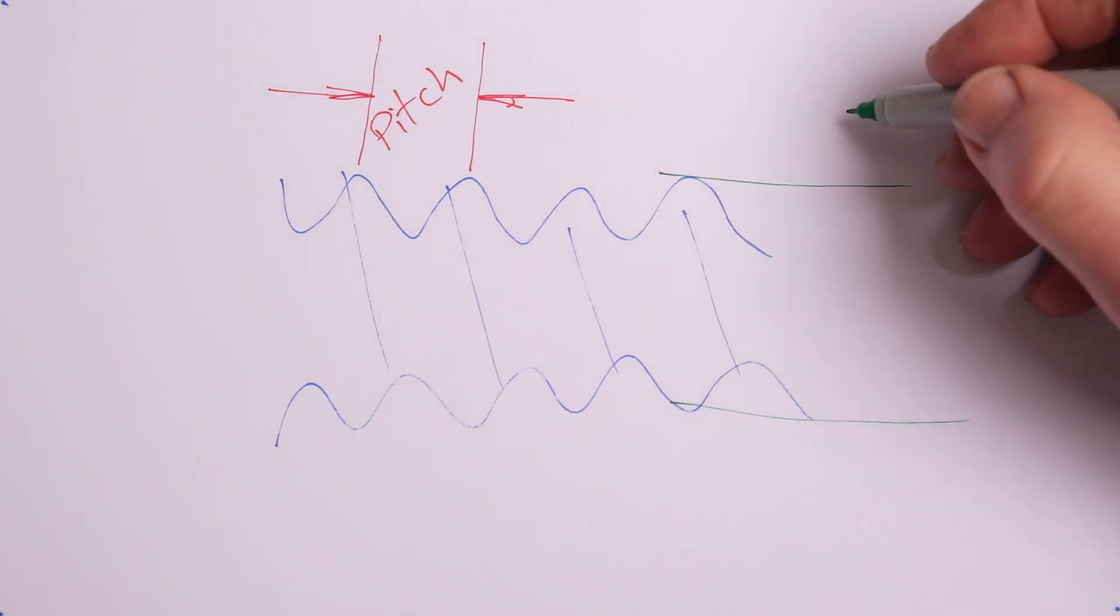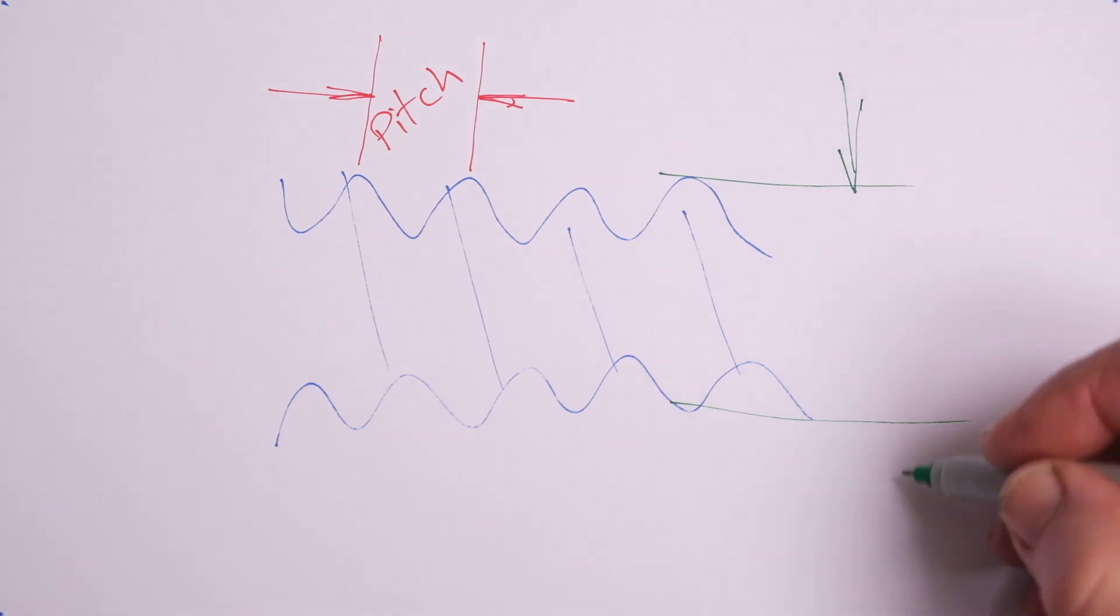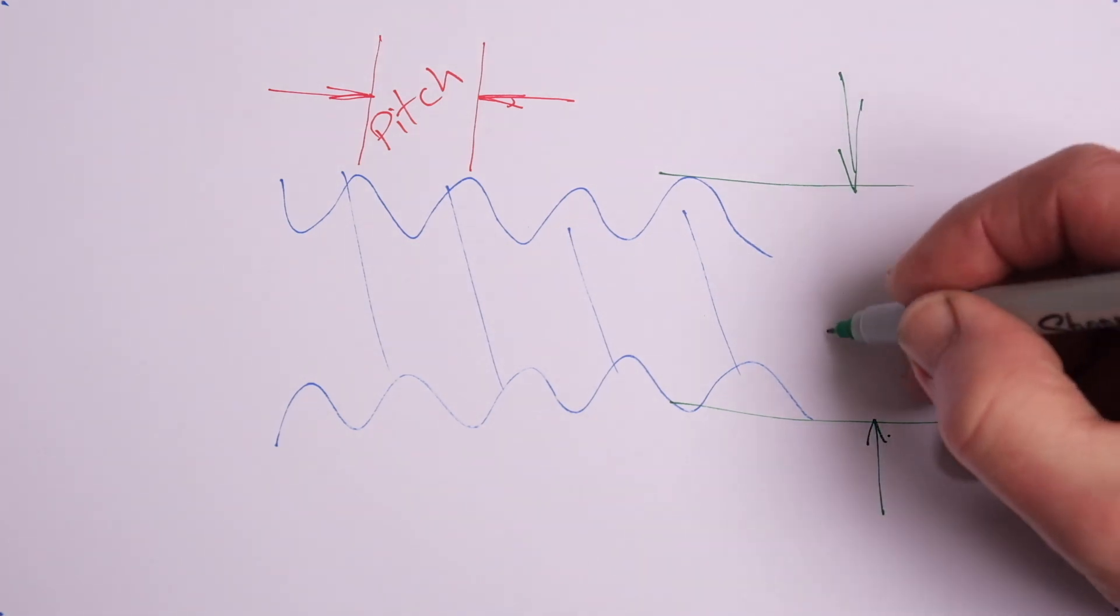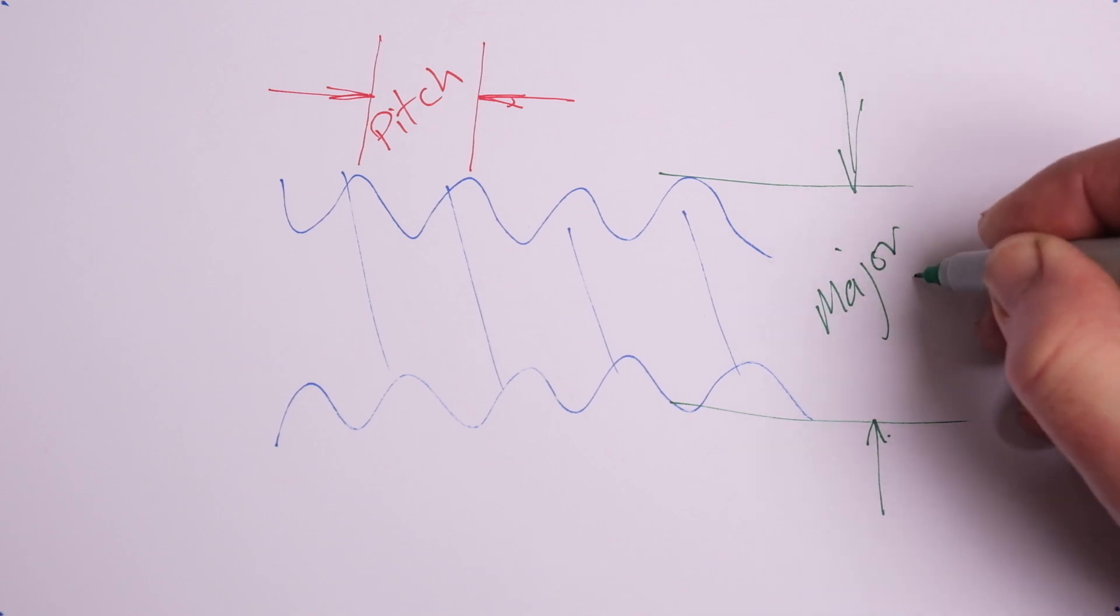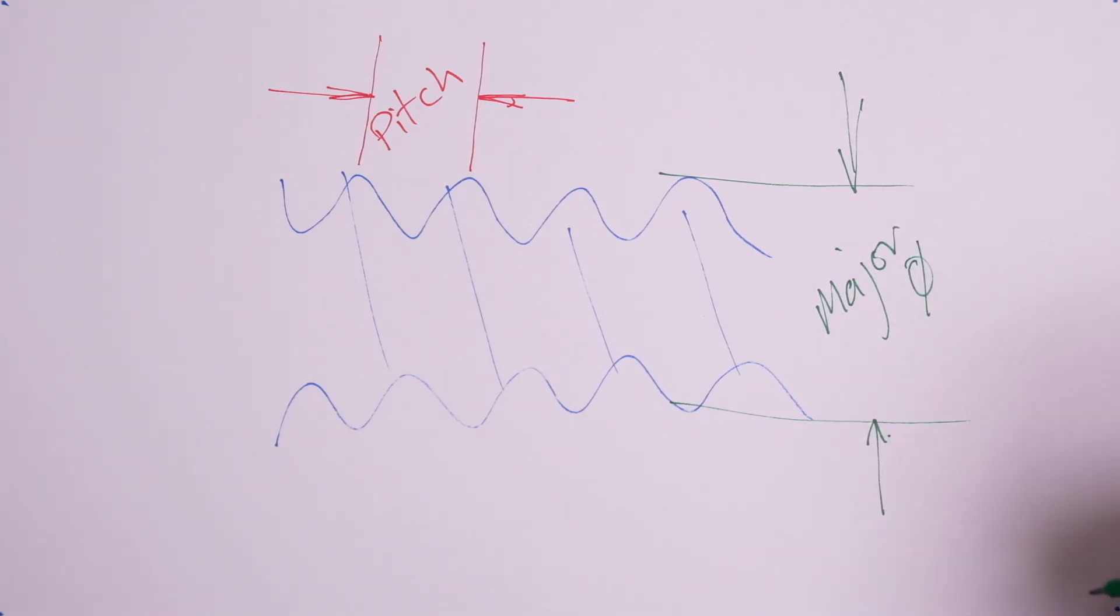The second value we're interested in is our major diameter, so outside diameter of the thread that we are trying to match. If you've got those two and you can match a thread to those values, the chances are we're going to be okay.